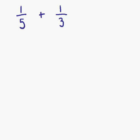Our first example, which is example 9, we have 1 fifth plus 1 third. Can we add these fractions as they stand just now? The answer is no. In order to add or subtract fractions, we must have a common denominator — the same number on the bottom of both fractions. What we are looking for is the lowest number that both 5 and 3 go into, which is 15.